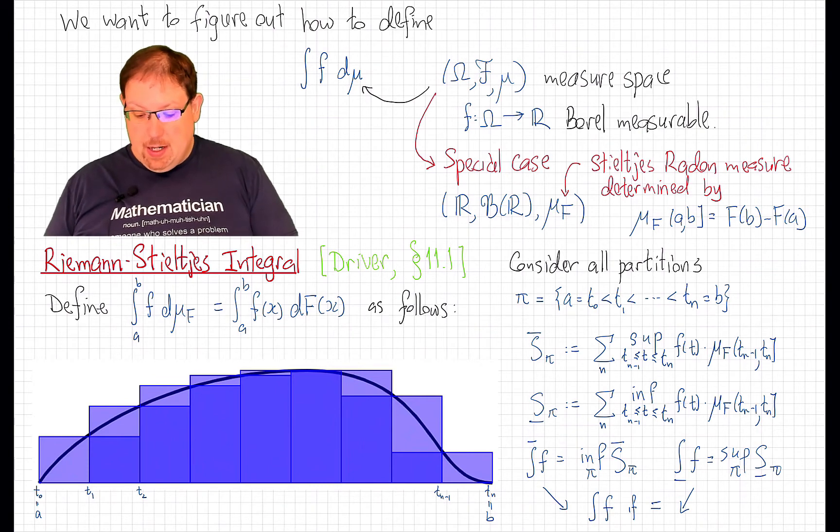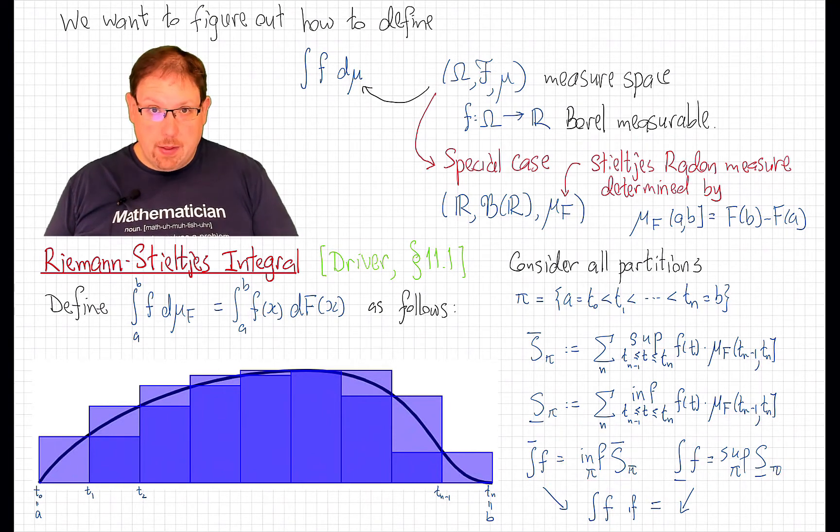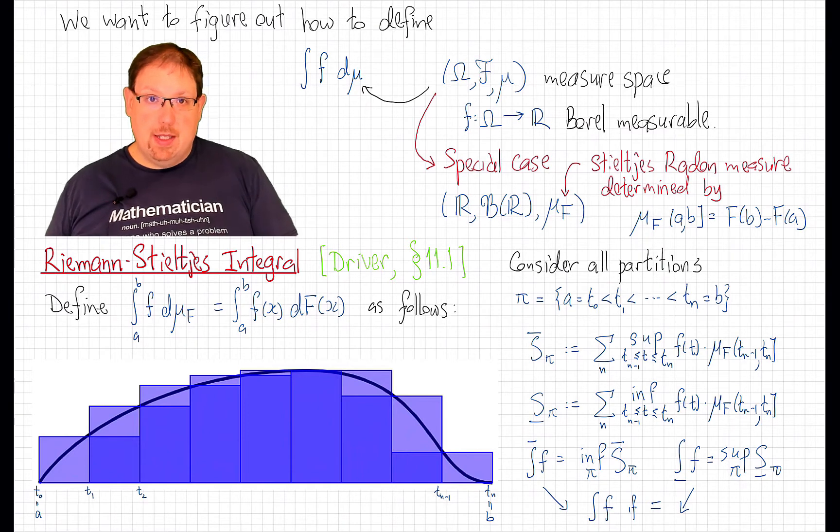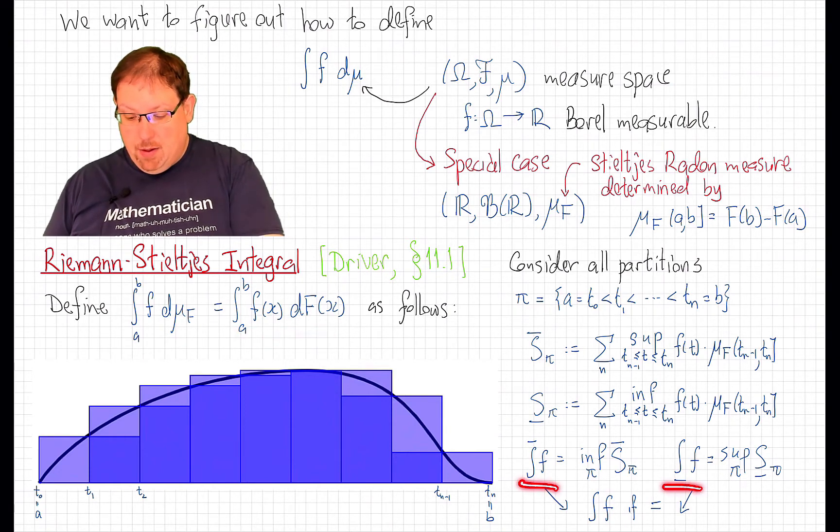to be clear, it is perfectly possible for these two quantities to be unequal. It is only if they're equal that we call the function Riemann-Stieltjes integrable on the interval from a up to b and define its integral to equal this common value.